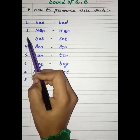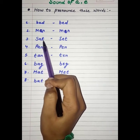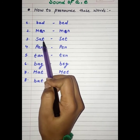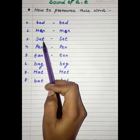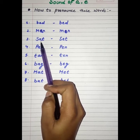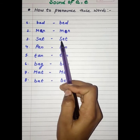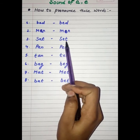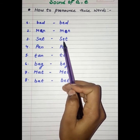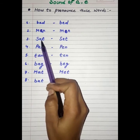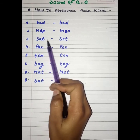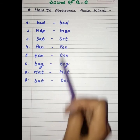And now the third one is S, A, T. In this word the ending is A, T — so what is the sound? At. S, A, T — sat. And this one is S, E, T — the ending is E, T, so the sound is 'et' — set. S, A, T — sat. S, E, T — set.